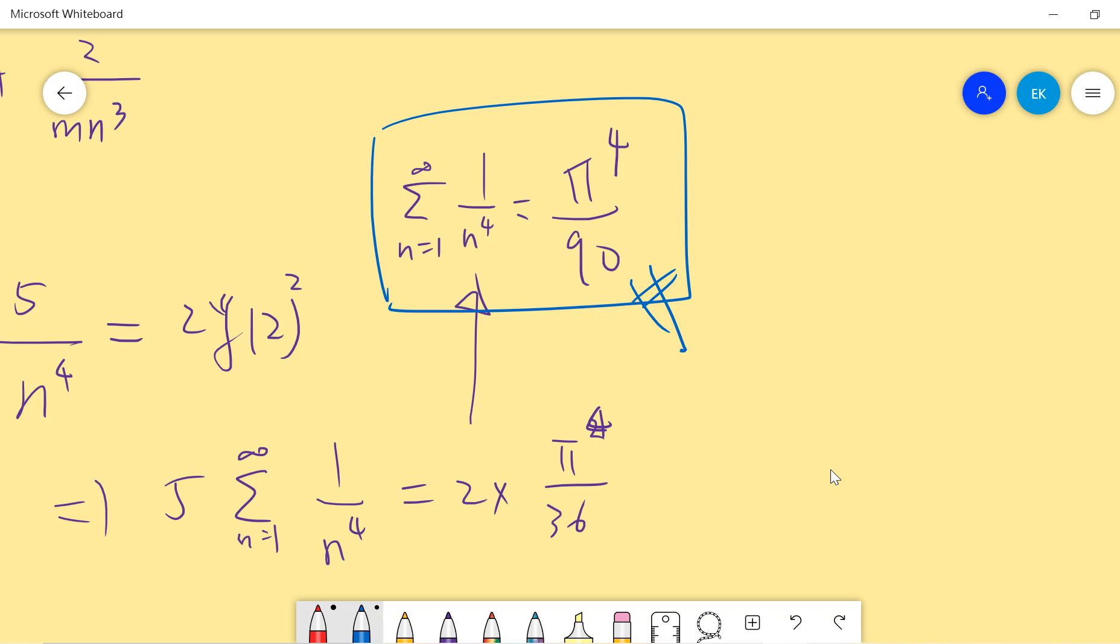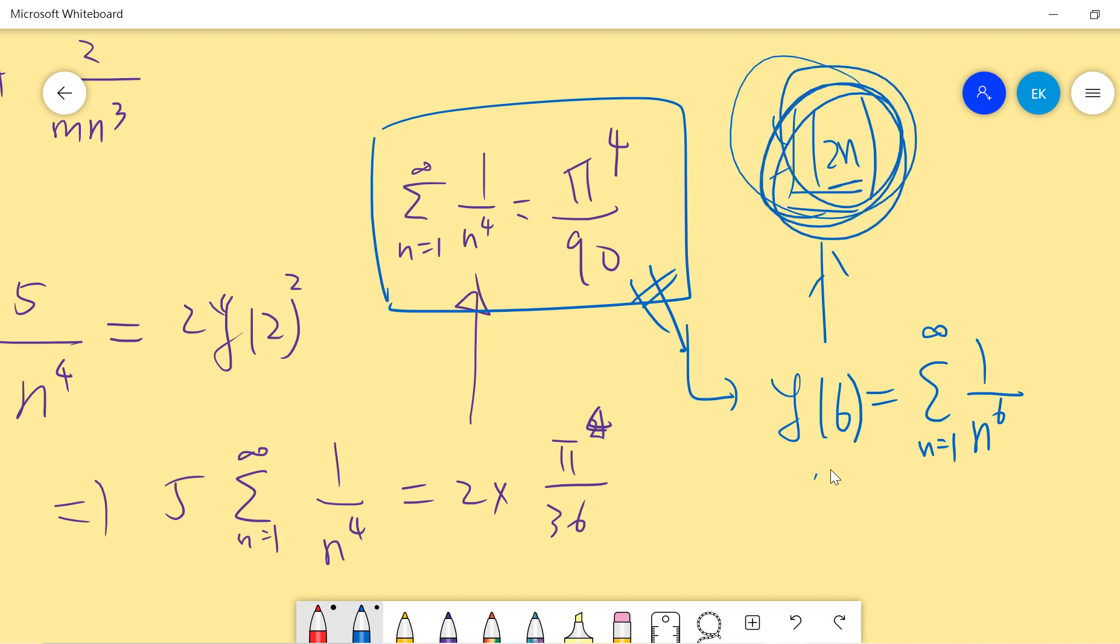We proved this interesting fact using a very elementary approach. There's no calculus in this, no Fourier analysis, no Taylor expansion, very interesting proof. Next time I will talk about how to extend this result to zeta 6, so basically zeta 2n, the Riemann zeta function at all the positive even integers. I will make a video for you. If you are interested in this topic and you're interested in math, physics and other algorithms, you can subscribe to this channel and I will keep putting out interesting videos for you guys. Thanks.